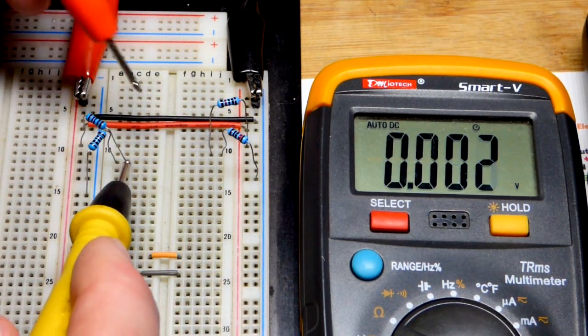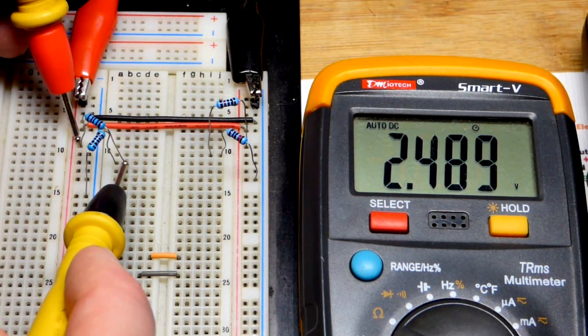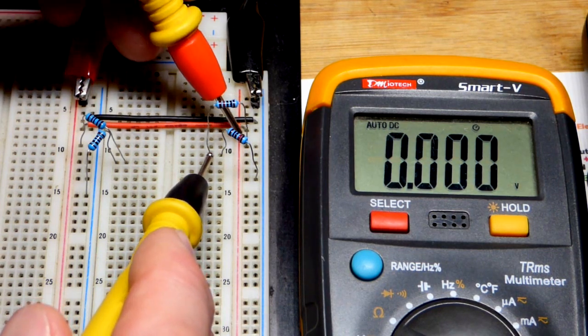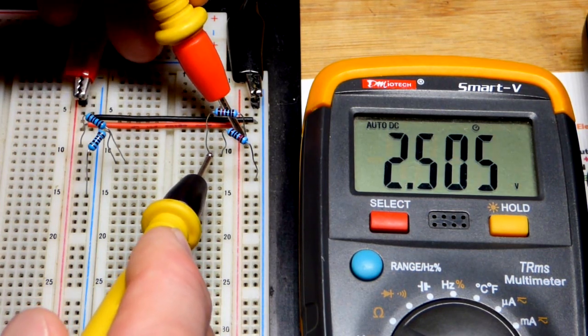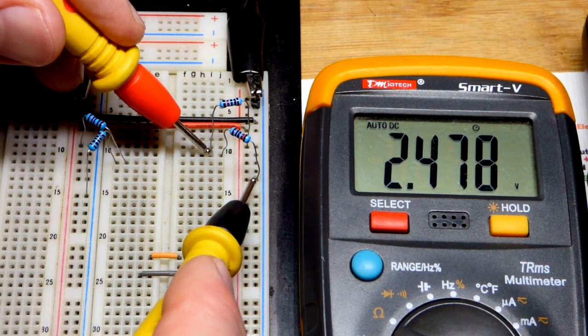So what happened to the other 2.5 volts? It's across this upper one right there. And same with that side there. The top resistor took half of the voltage and the bottom resistor has the other half across it.